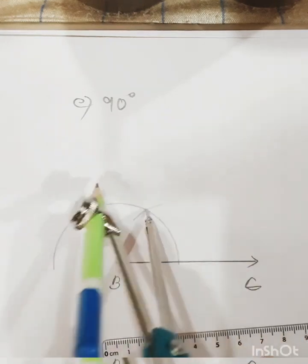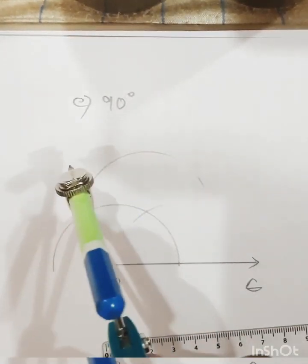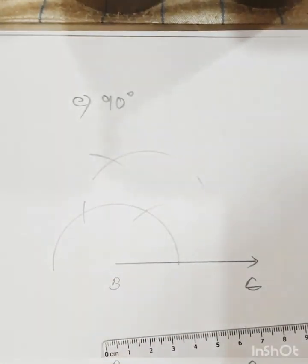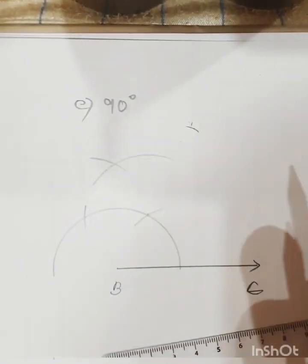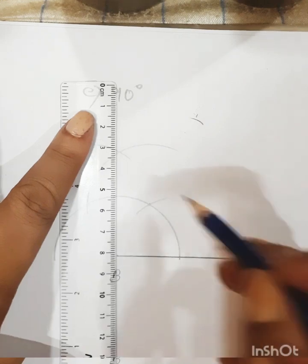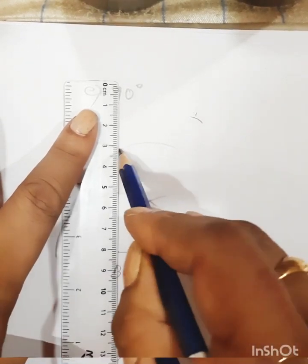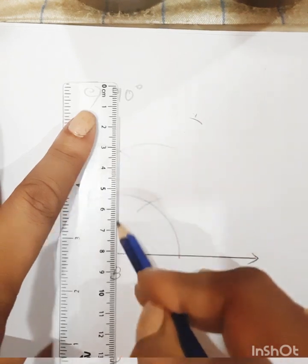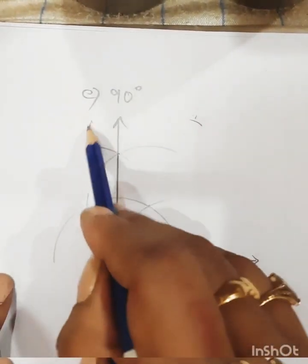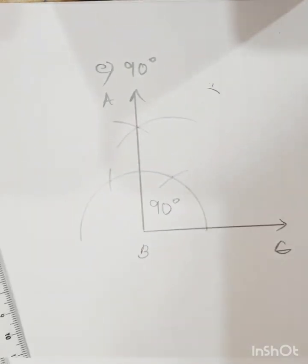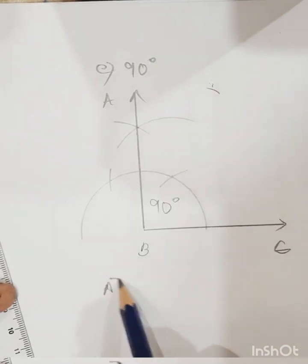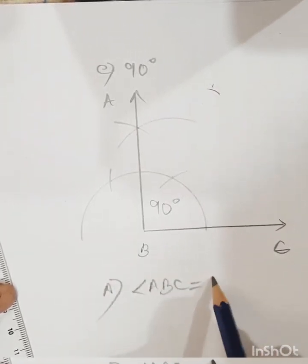Keep your compass at this point, draw an arc, then keep your compass at the other point and draw another arc. Join these two points and you have got your 90 degrees. Angle ABC is equal to 90 degrees.